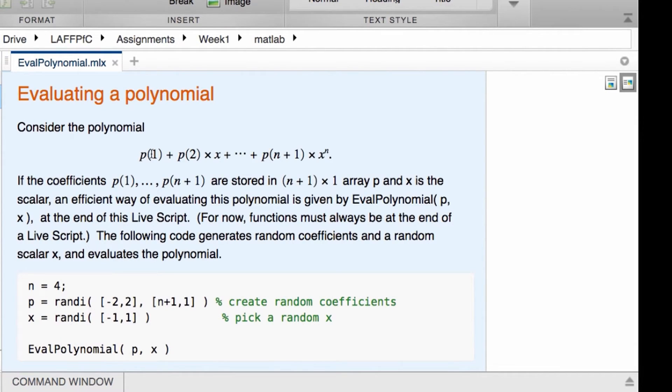And what it says is that we're going to evaluate a polynomial where the coefficients of the polynomial are stored in array p with n plus 1 coefficients, entries. And then you're going to take a point x, a scalar x, at which to evaluate this polynomial. The formula for the polynomial is given right here. That is some mathematics that you can enter.